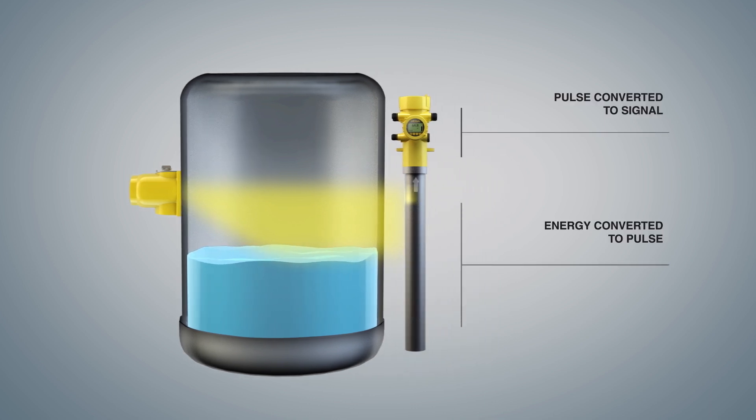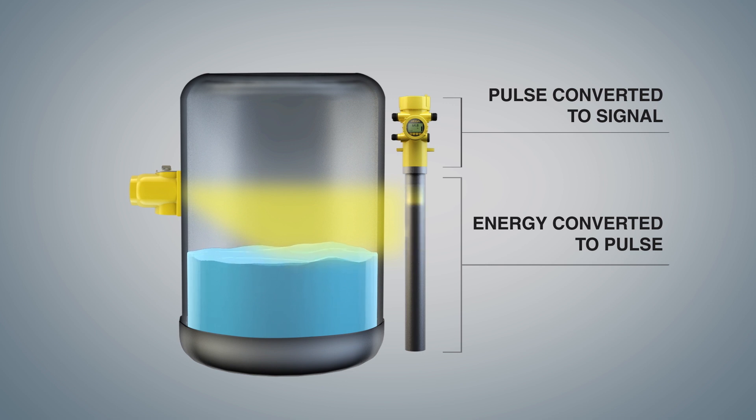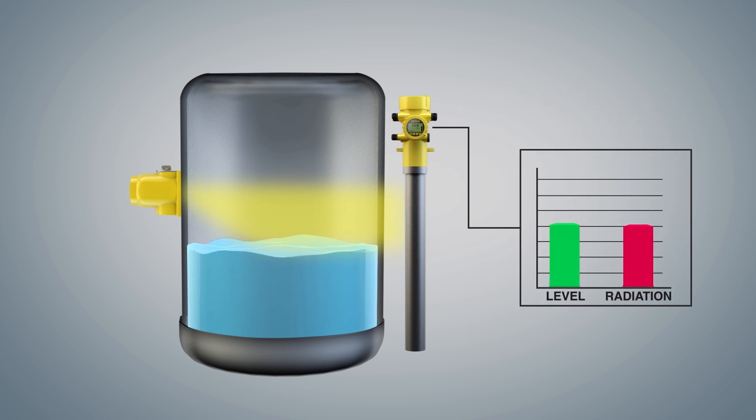When gamma energy reaches the detector, it is converted to a pulse of light that transmits until it reaches the photomultiplier, where it is amplified and processed into an electronic signal. As mass increases in the process, less radiation reaches the detector. The detector electronics use the gamma reading to infer a measurement and outputs the value.